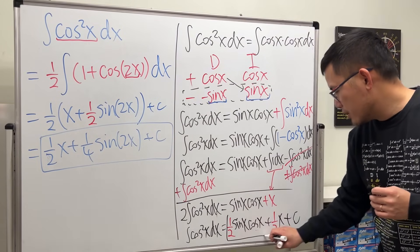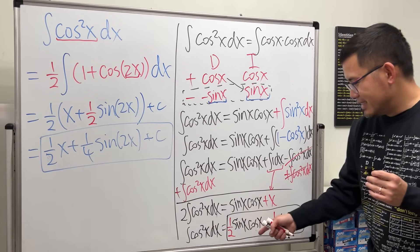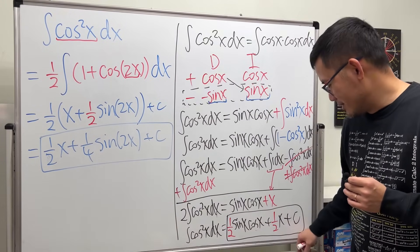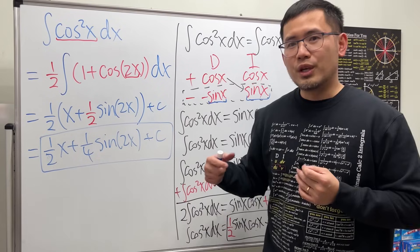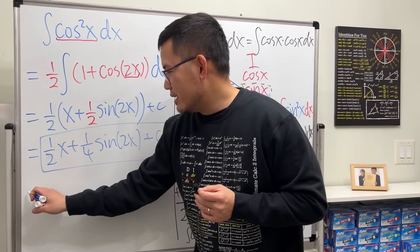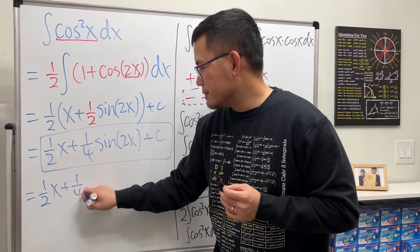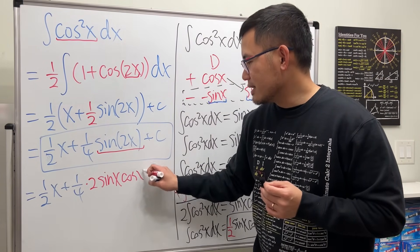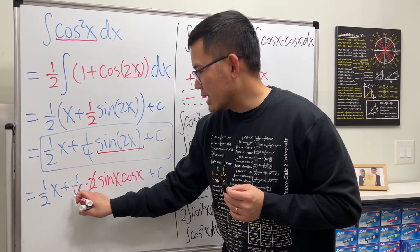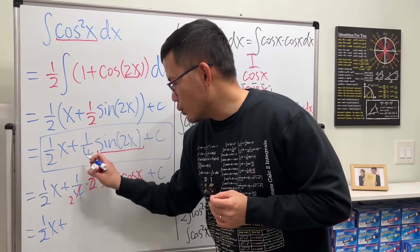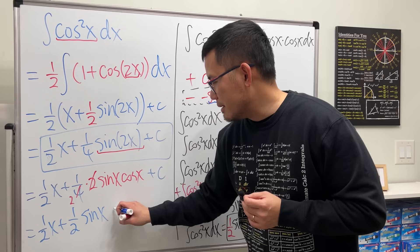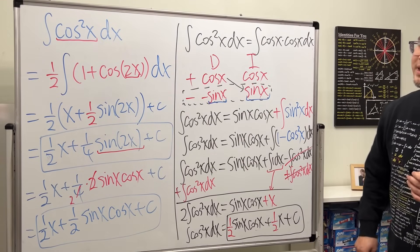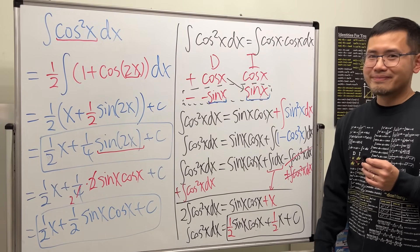This doesn't look the same as the first answer — but don't worry. They are equal. In the first answer we have sine of 2x, and using the double angle identity for sine: sine(2x) equals 2 sine x cosine x. So (1/4)sine(2x) becomes (1/4)(2 sine x cos x) which reduces to (1/2) sine x cosine x. Therefore both answers are (1/2)x plus (1/2)sine x cosine x plus C — indeed they are equal. Let me know which method you prefer!